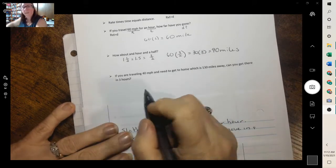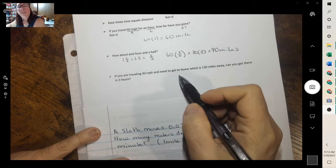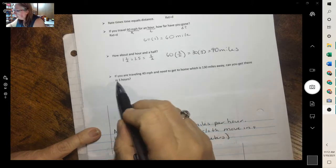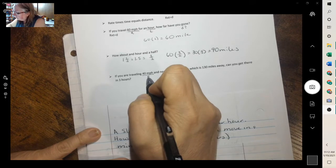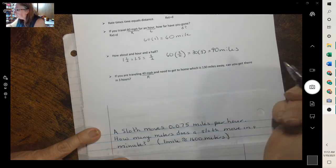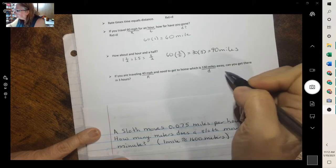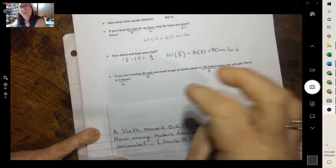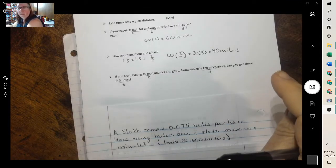Let's look at the next one. If you are traveling 40 miles per hour and need to get home, which is 130 miles away, can you get there in 3 hours? Well, we know this is rate because it's miles per hour. 130 miles away, that's distance. And they gave us T, 3 hours. So they gave us all 3. What we need to do is pick 2 of them and see if it matches the 3rd.